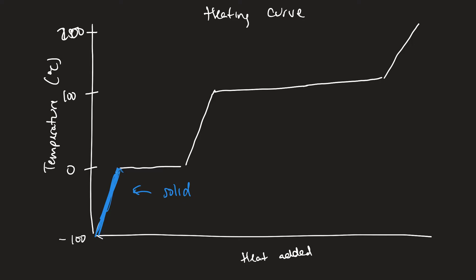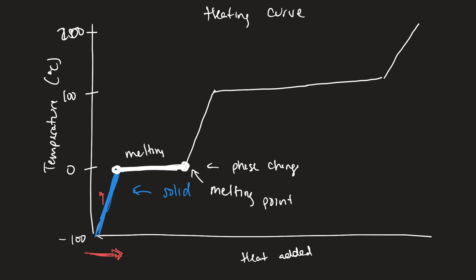When energy is being added — here's the x-axis — you notice that the temperature is rising. The temperature will continue to rise up until it gets to a certain point — this plateau here. Anytime you see a plateau, this represents a phase change. The phase change a solid goes through is melting, so this temperature here is your melting point. For water, the melting point is zero degrees Celsius. This point is what we call the heat of fusion, or the enthalpy of fusion.